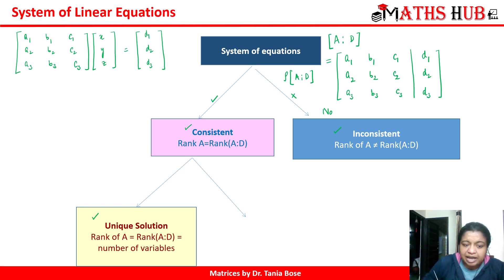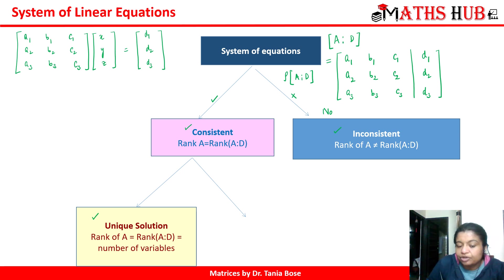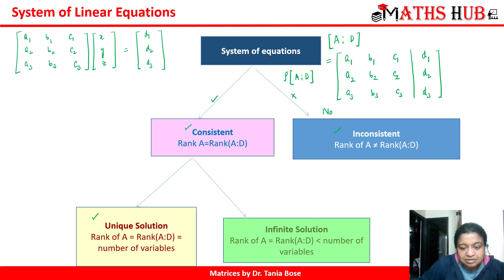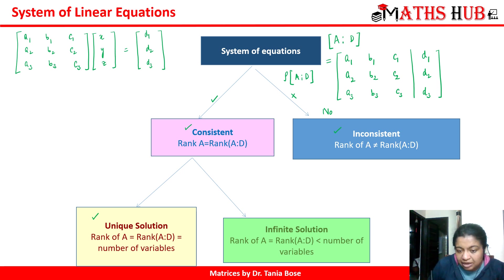The solution will be unique whenever rank of A equals rank of [A|D] and both equal the number of variables. Here we have three unknown variables, so when the rank equals three, it will always have a unique solution. The system will have infinitely many solutions whenever rank of A equals rank of [A|D] but both are less than the number of variables — so if there are three variables, the rank can be either two or one.